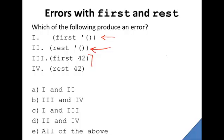First and rest always expect to receive a list as an input, and so calling first and rest on 42 will also produce an error. So the answer here is E. All of the above will create errors.